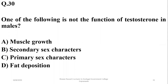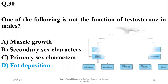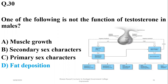Number thirty: one of the following is not the function of testosterone in males. Testosterone is a hormone which performs a variety of functions in the human body, such as muscular growth, secondary sex characteristics at puberty, and control of primary sex characteristics at the embryonic stages. But fat deposition is not a function of testosterone, so the right option is delta.